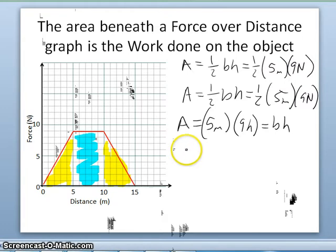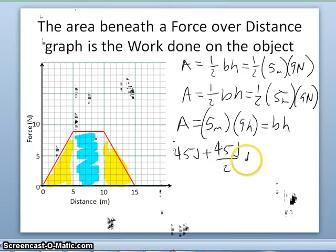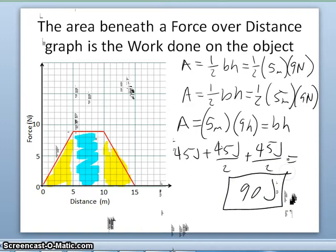I see that nine times five is 45 joules. This is 45 joules divided by two. This is 45 joules divided by two. So 45 joules over two plus 45 joules over two plus 45 joules, I get 90 joules. The amount of work done on an object that experienced this force over this distance is 90 joules. And that's found by the area beneath a force over distance graph. It's a good thing to keep in mind.